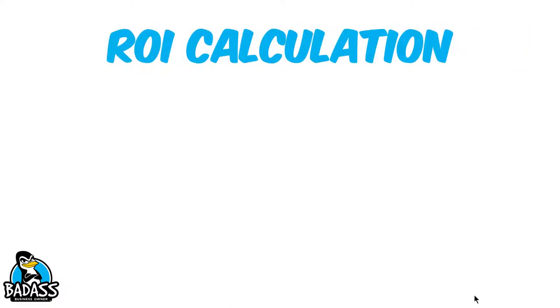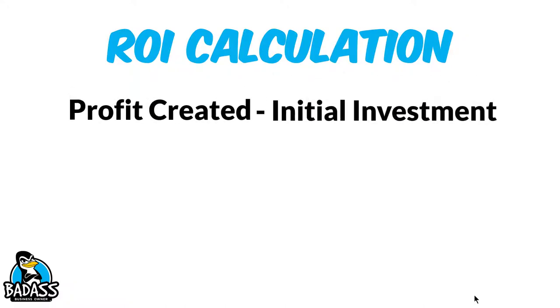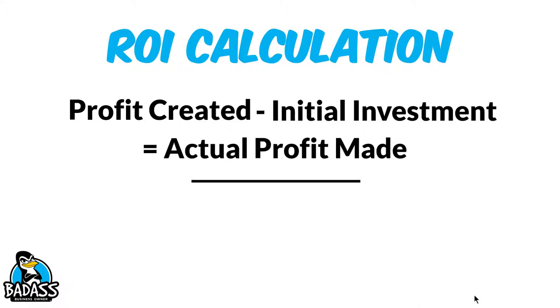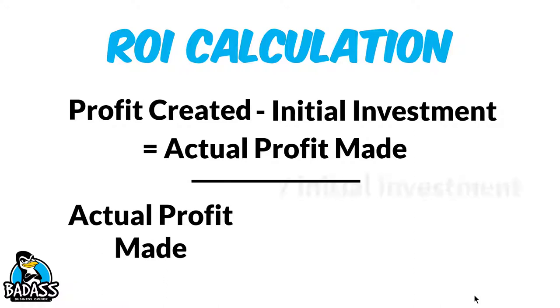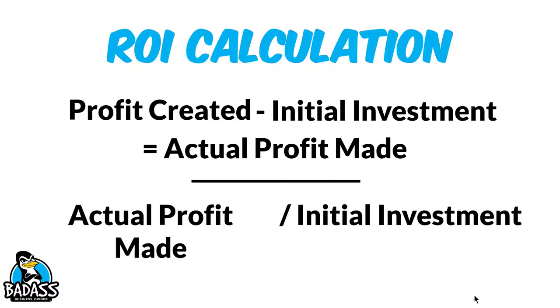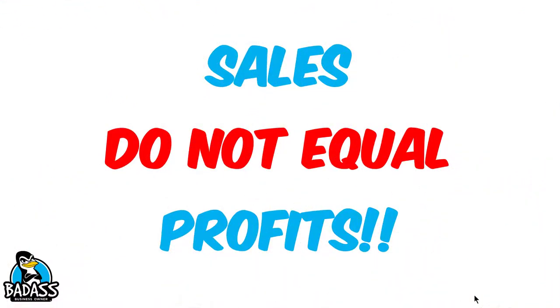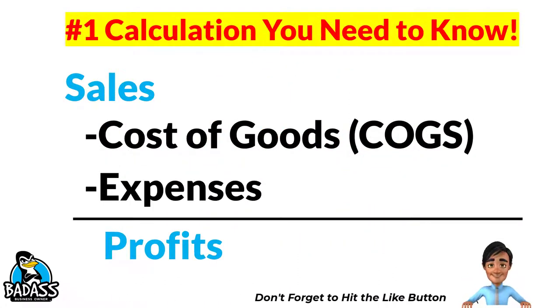I'm going to show you the calculation, and then we're going to take a look at a few examples. To calculate ROI, we take the total profit created and subtract the initial investment — this gives us the profit actually made. We then take that number and divide it by the initial investment, and since we want a percentage, we multiply by 100%. Now also notice that I didn't say sales. Sales are not profit. We want to know how much you make after your costs and expenses.